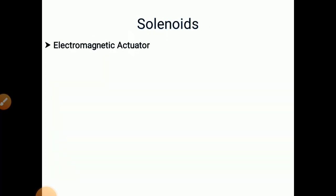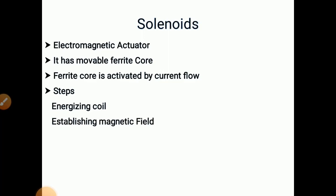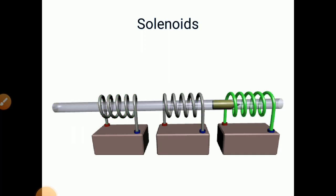Now we will study solenoids. A solenoid is an electromagnetic actuator — it has a movable ferrite core, which is activated by current flow. The steps are: energizing the coil, then establishing a magnetic field, then pushing or pulling the core. As the coils are activated one by one, the core gets attracted toward those coils and moves through them. Solenoids are useful for linear movement and are also called electromagnetic actuators.